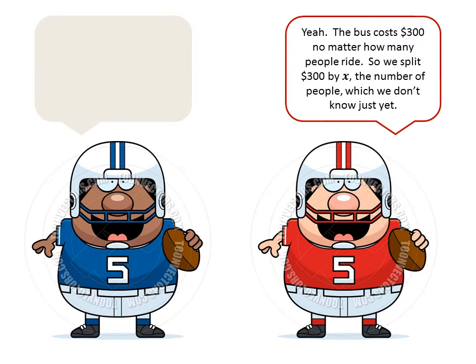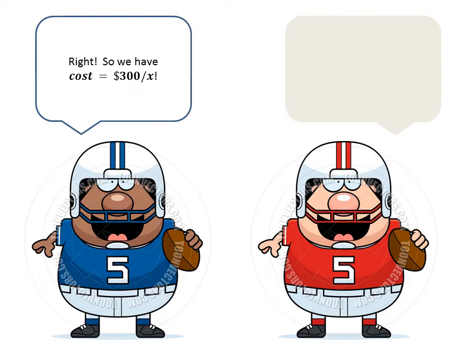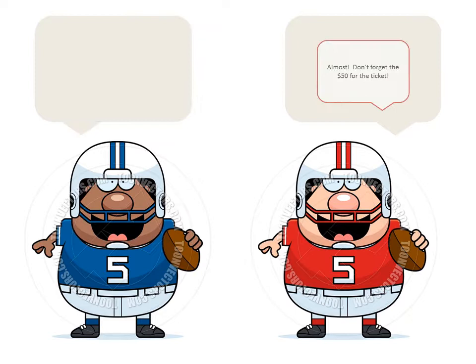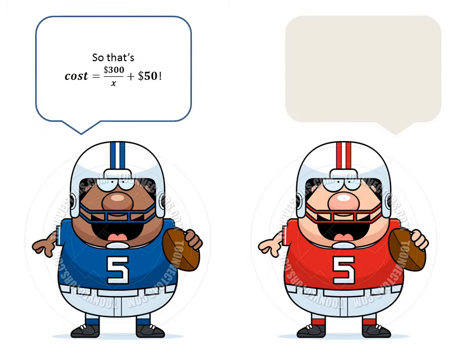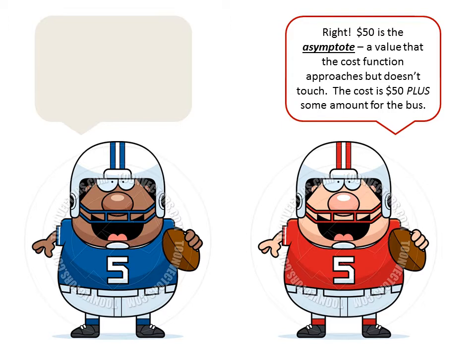Rational what? Yeah, the bus costs $300 no matter how many people ride. So we split $300 by X, the number of people, which we don't know just yet. Right. So we have cost equals $300 divided by X. Almost. Don't forget the $50 for the ticket. So that's cost equals $300 divided by X plus $50. Right. $50 is the asymptote, a value that the cost function approaches but doesn't touch. The cost is $50 plus some amount for the bus.